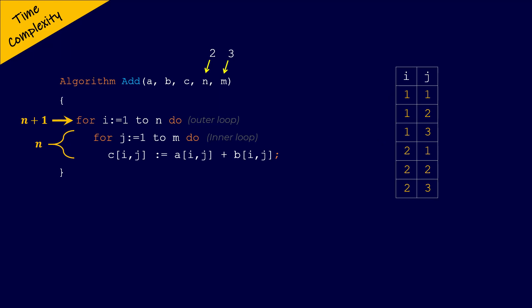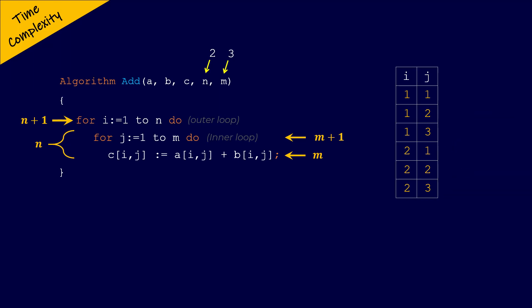For the inner for loop, when M = 3, the statements inside execute for 3 times — variable J is initialized to 1 and incremented until it reaches M. When J becomes 4 (more than M = 3), the inner for loop terminates. In general terms (J from 1 to M), the statements inside the inner for loop execute M times, and the inner for loop itself executes M+1 times.